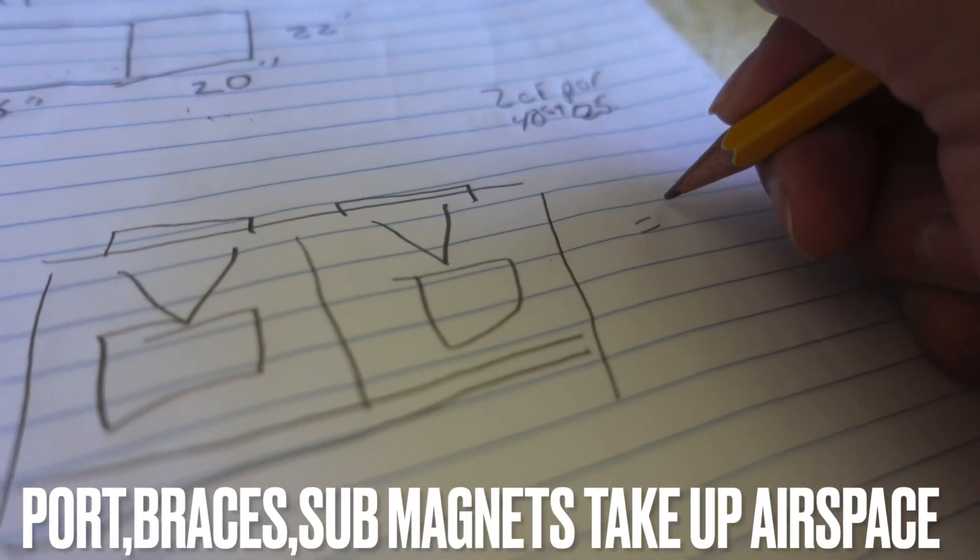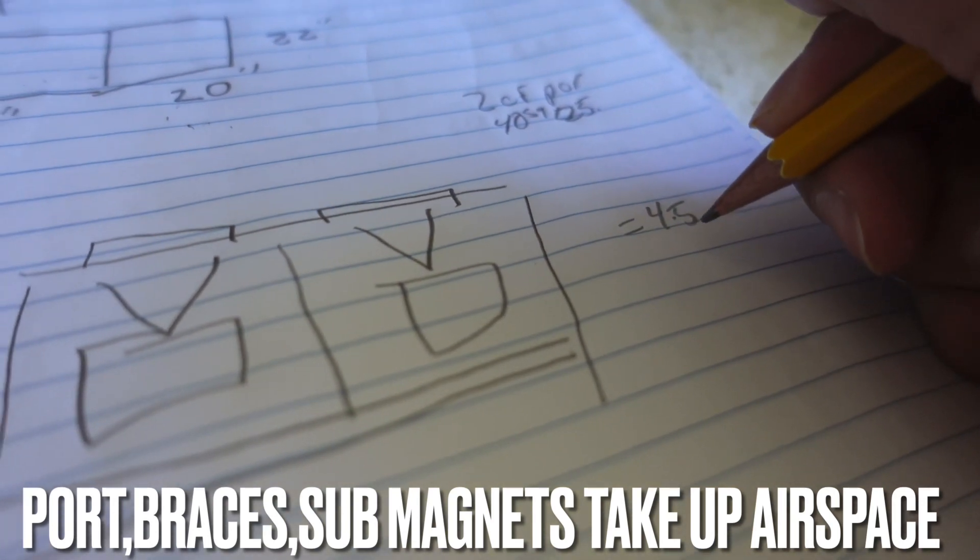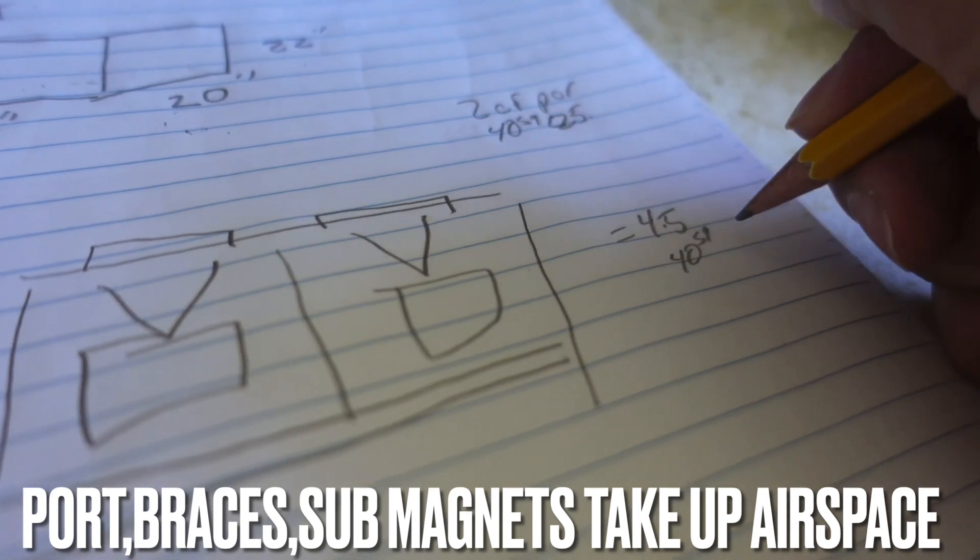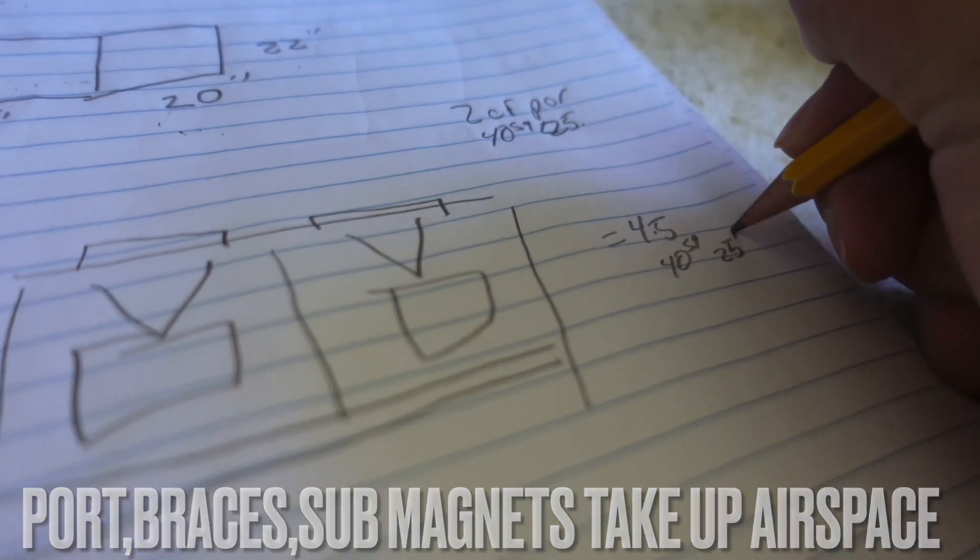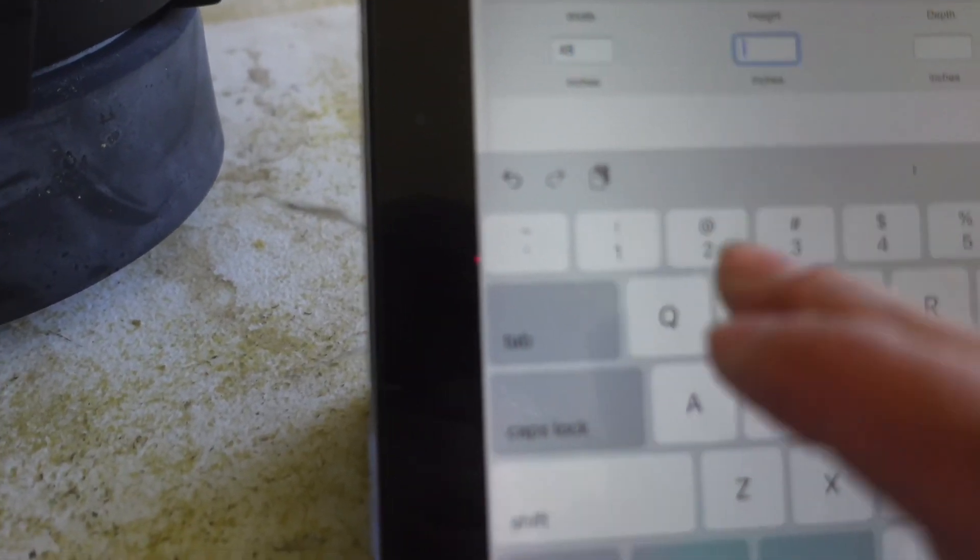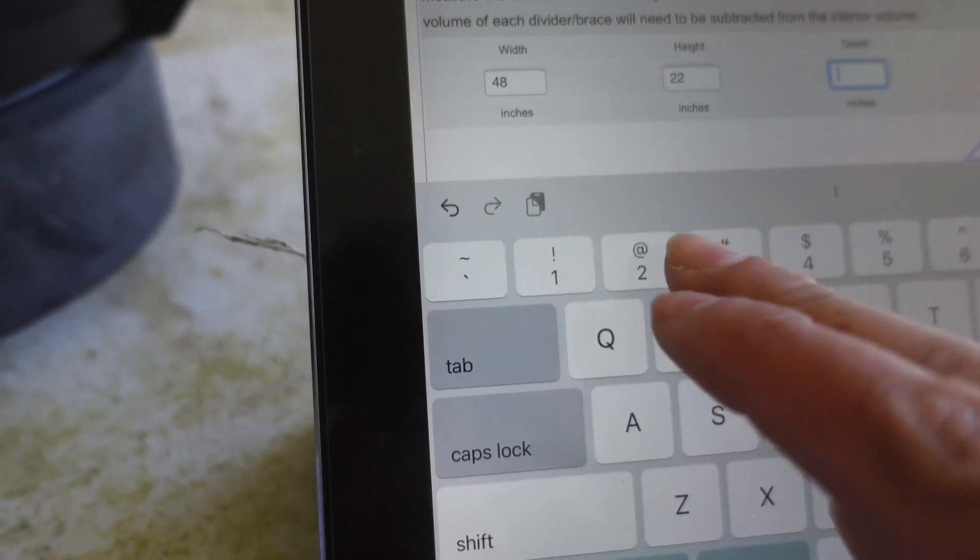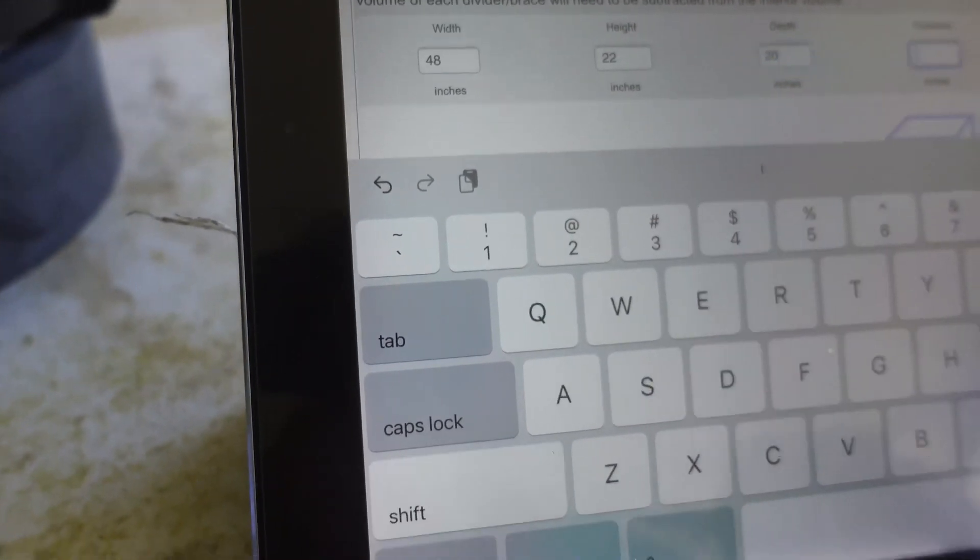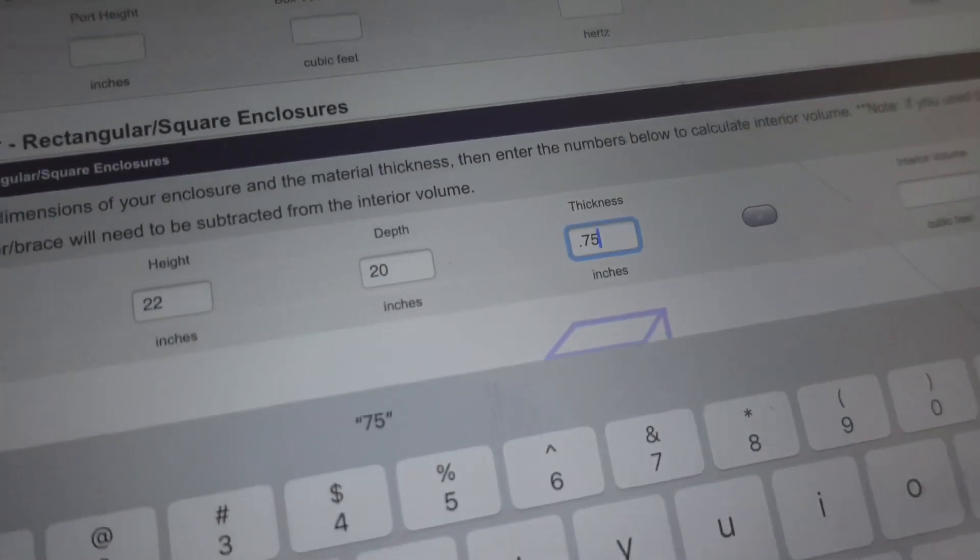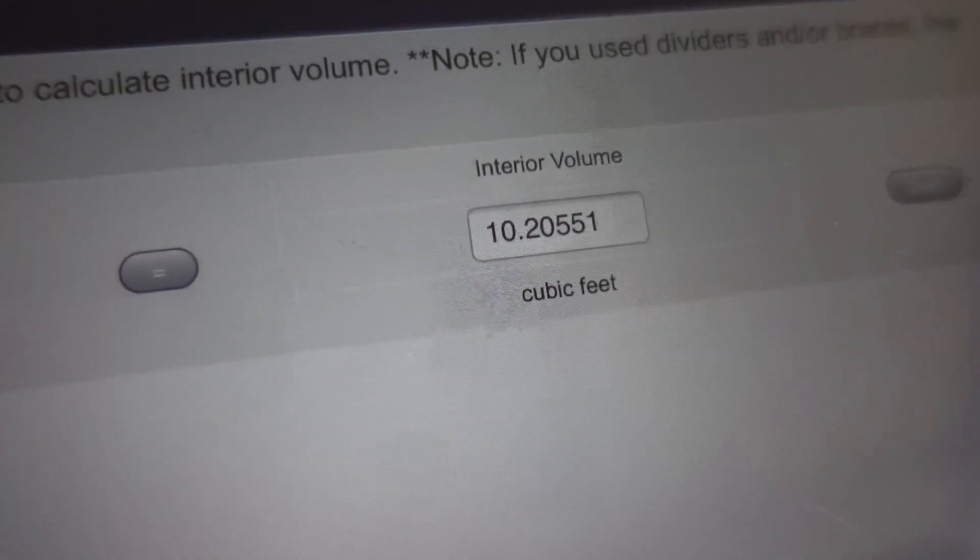Overall we need about 4.5 cubes because of port, braces, and everything. We need a 40-square-inch port, 25 inches long. Let's put our numbers in. So it's 48 width, height 22, and depth 20.75. That automatically gives us 10 cubes. If we were doing four 12s that would be perfect, but since we're only doing two 12s, we need to bring it down some.